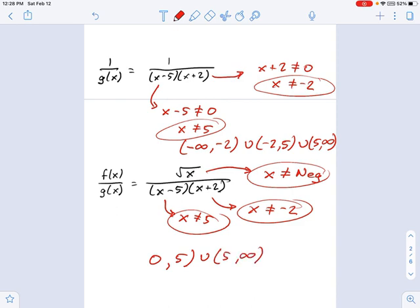Now, zero itself is okay, right? On the bottom of your equation, you'd have negative 5 times 2, that's no problem. On the top of your equation, you have square root of zero, that's also fine. So here's your domain restriction.